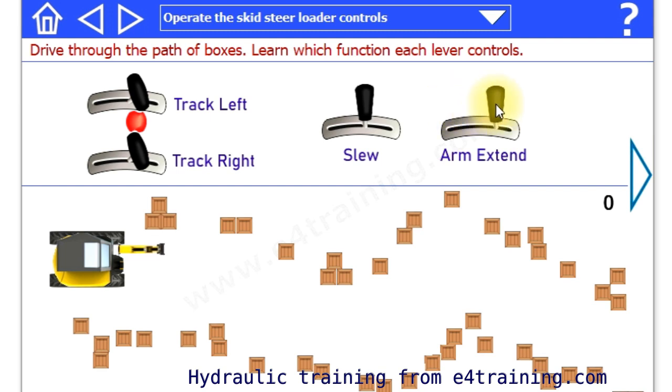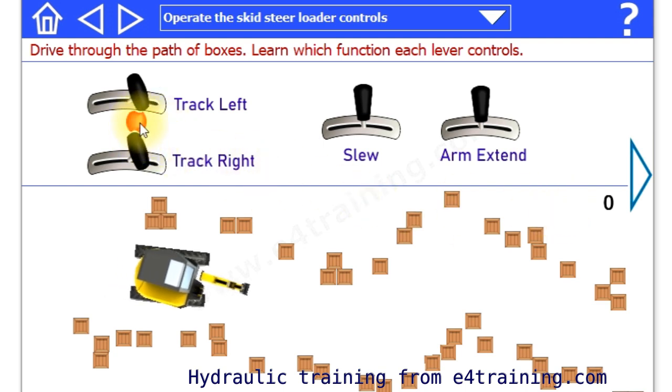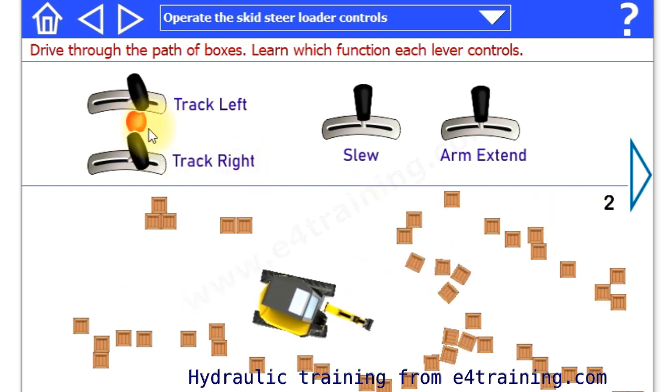So we've got boom and arm extend, we've got a slew and we've got track drive for right and left. So the idea is just to drive through these lines of boxes without actually banging into them.